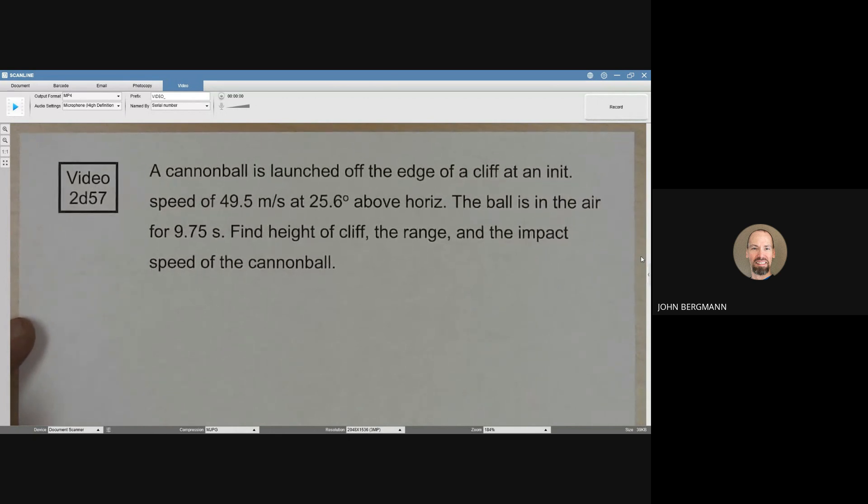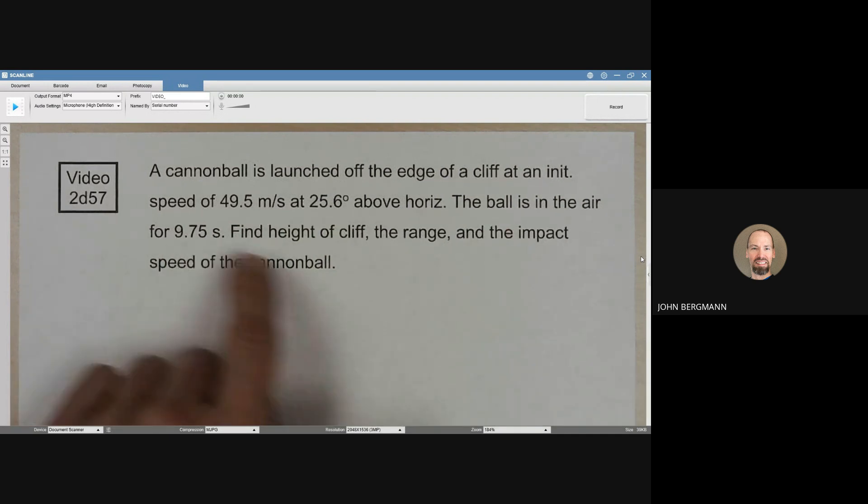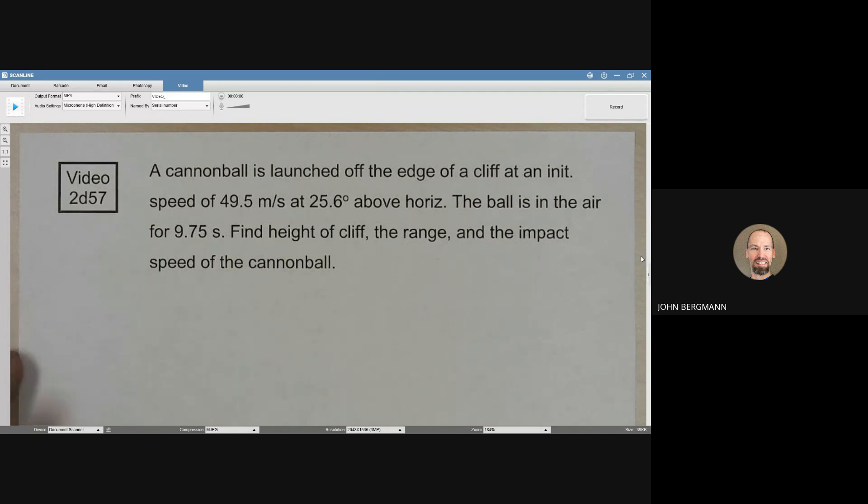Here we're told that a cannonball is launched off the edge of a cliff at an initial speed of 49.5 meters per second at this angle above horizontal. The ball is in the air for that amount of time. Find those things.